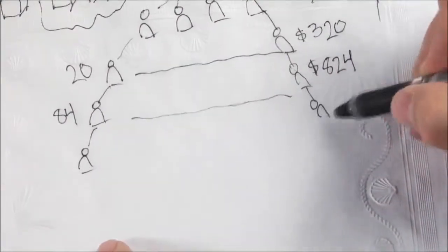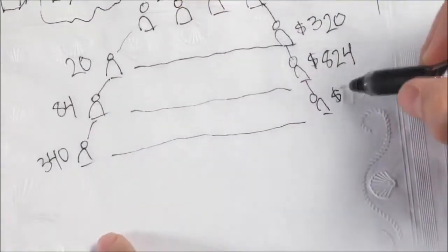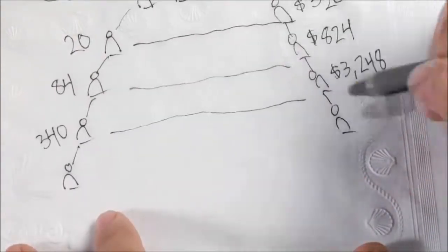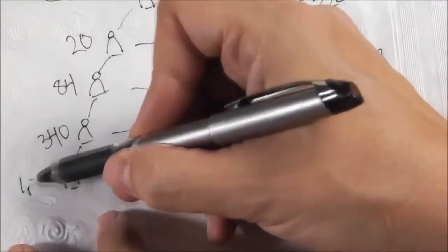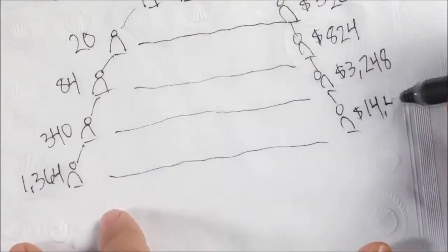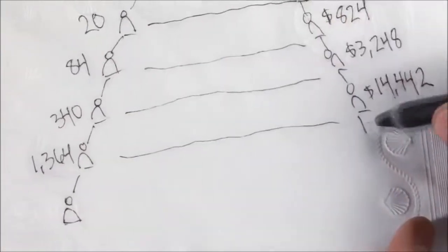Continuing that same model will create 340 people on your next level and potential earnings of $3,248 on a weekly basis. On your next level, you would have 1,364 people creating potential earnings of, get this, $14,442 weekly.